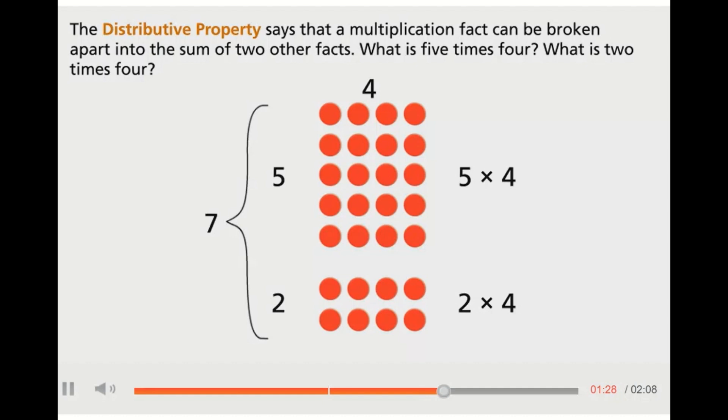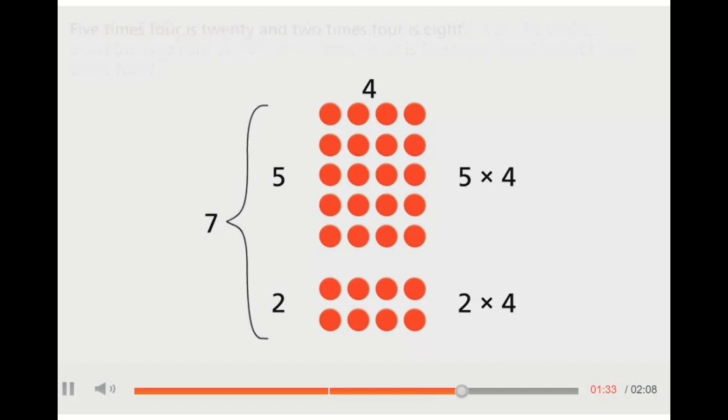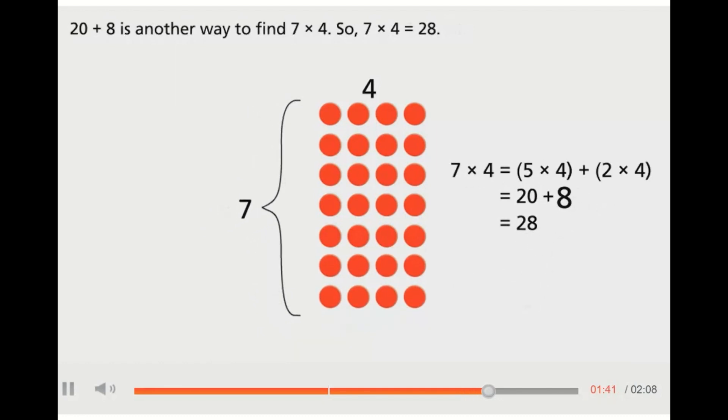What is five times four? What is two times four? Five times four is twenty, and two times four is eight. Twenty plus eight is another way to find seven times four. So, seven times four equals twenty-eight.